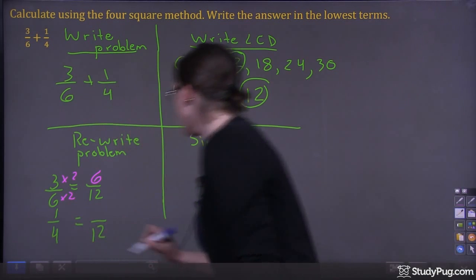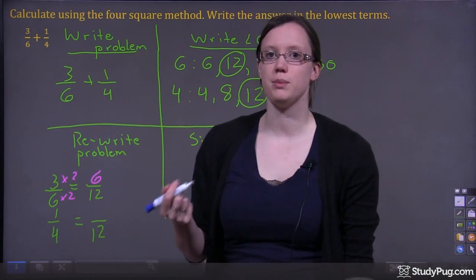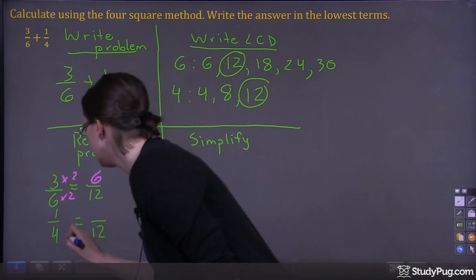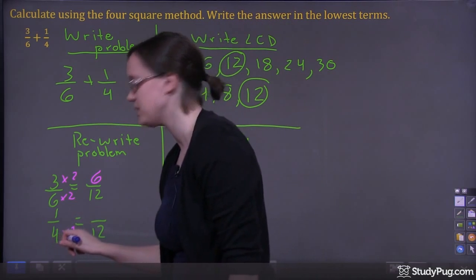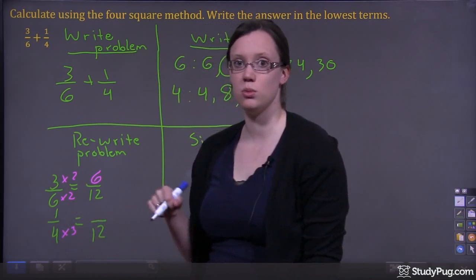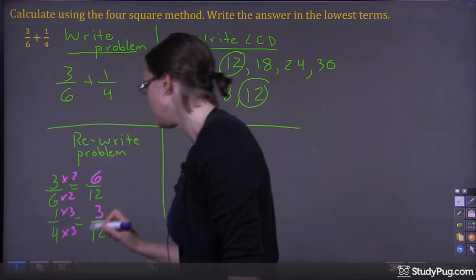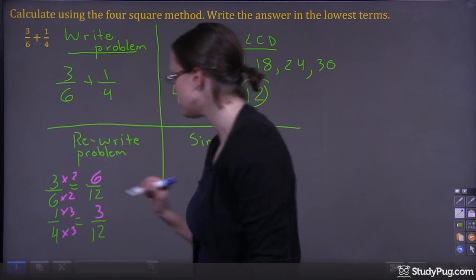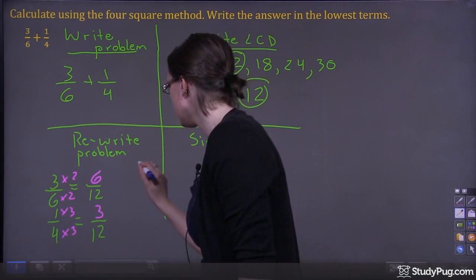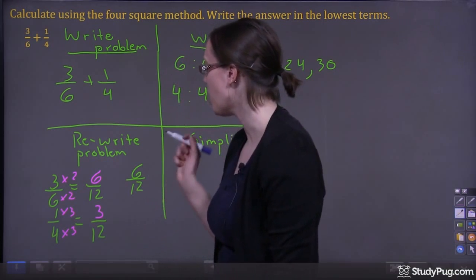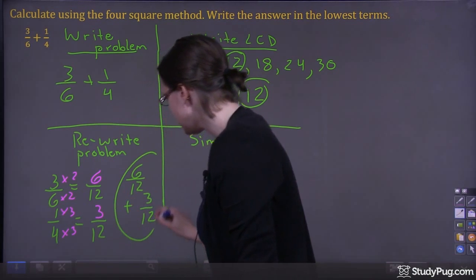Now let's look at the second fraction, one over four. What do we need to multiply four by to get twelve? Four times one is four, four times two is eight, and four times three is twelve. So we multiply the denominator by three, and we must also multiply the numerator by three — one times three is three. So our equivalent fraction is three over twelve. The problem rewritten is six over twelve plus three over twelve.